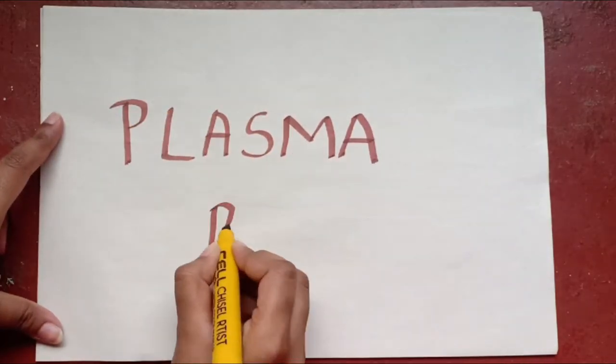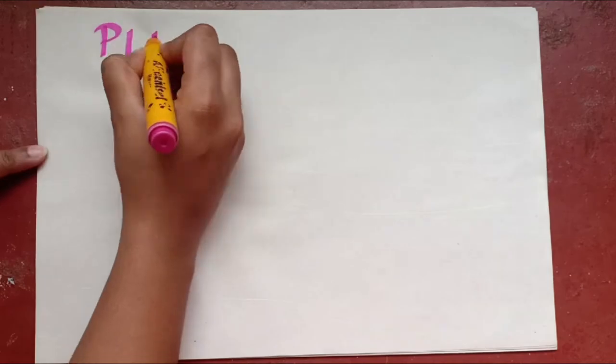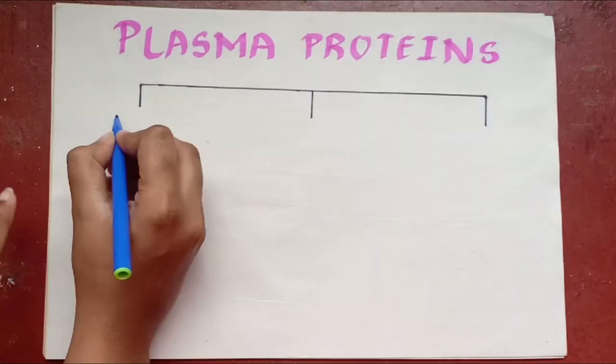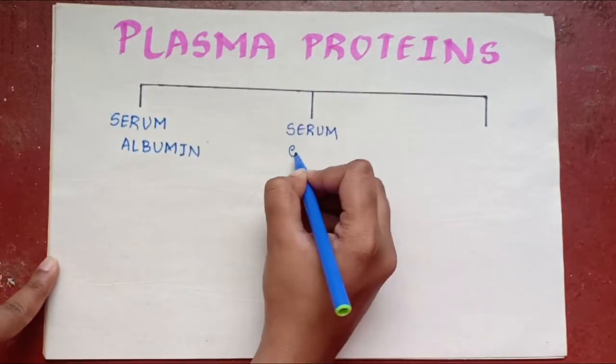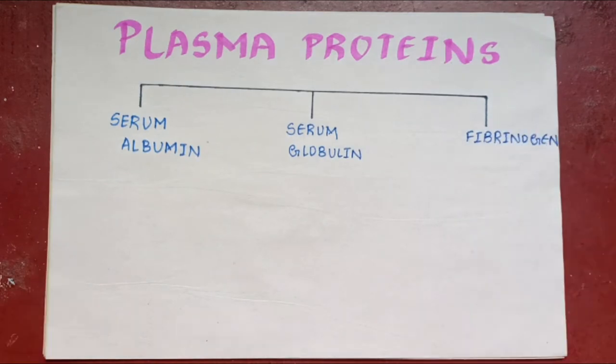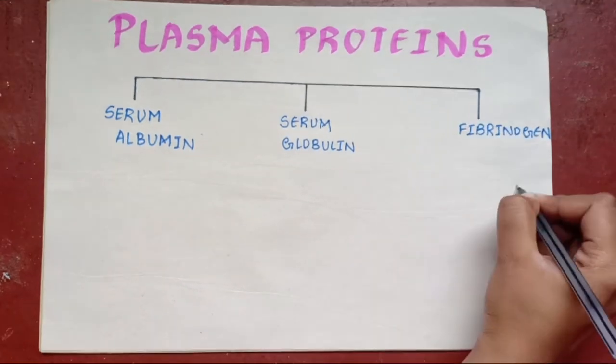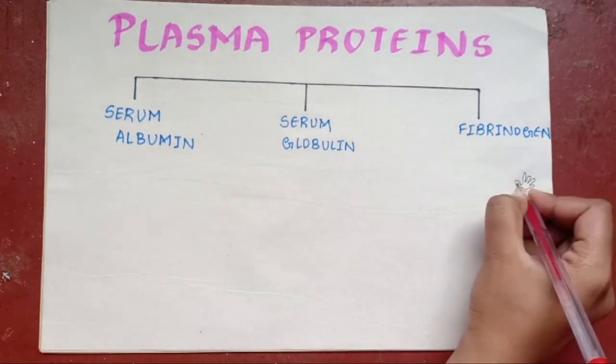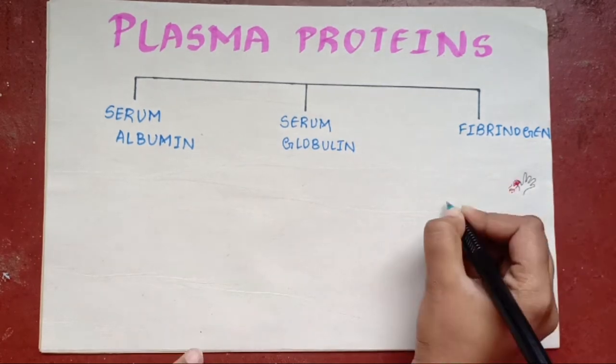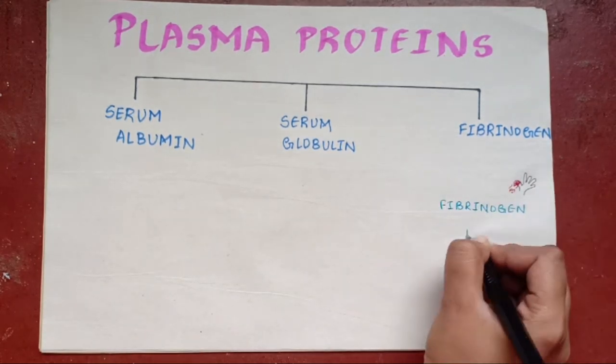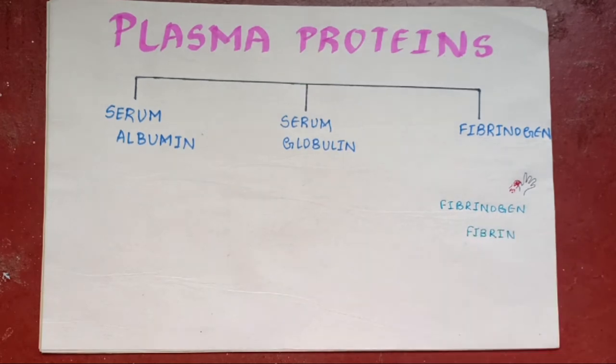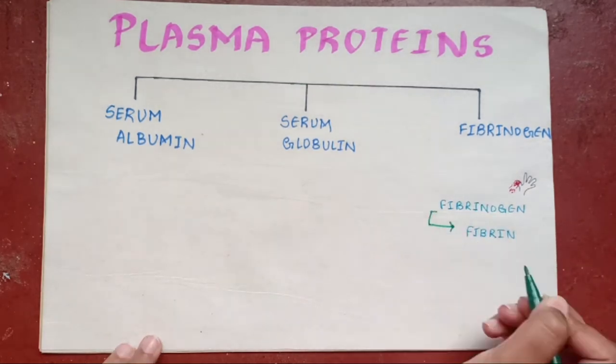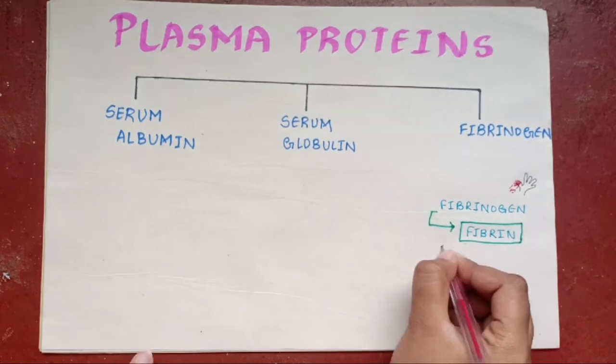Plasma proteins. Basically, the plasma proteins are of three types: serum albumin, serum globulin, and fibrinogen. When the blood is shed or collected in a container, the coagulation occurs. In this process, the fibrinogen is converted into fibrin and the blood cells are trapped in this fibrin, forming the blood clot.